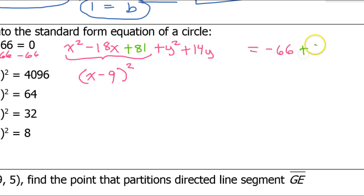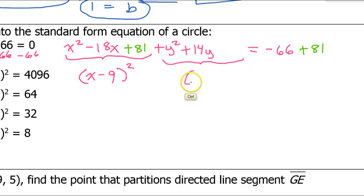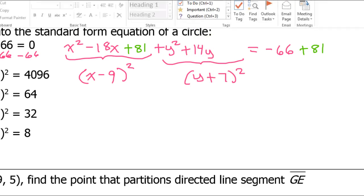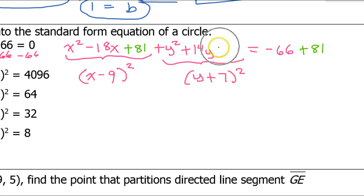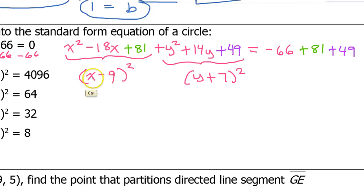Doing the same thing with the y-terms: this trinomial becomes (y plus 7) squared, since 7 is half of 14. I fill in the constant: 7 squared is 49, so I add plus 49 inside and also put plus 49 on the right-hand side to balance.